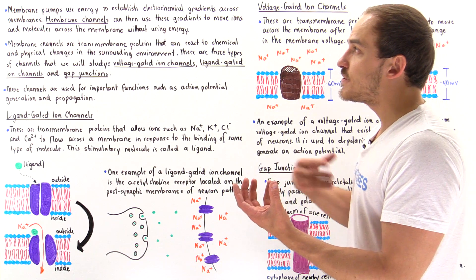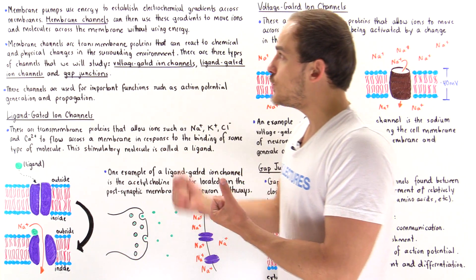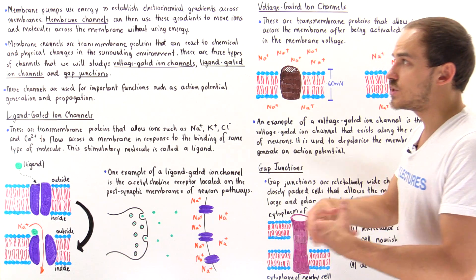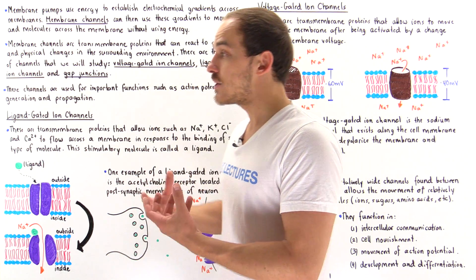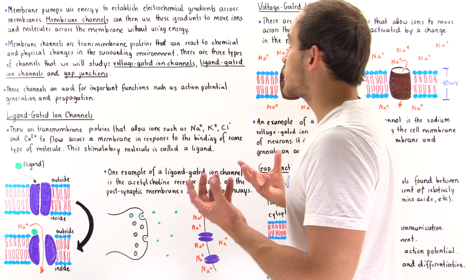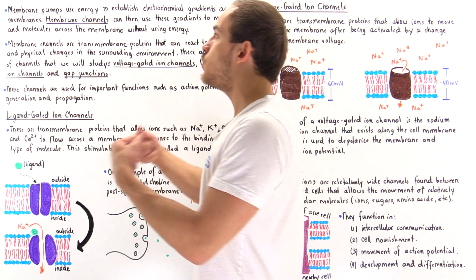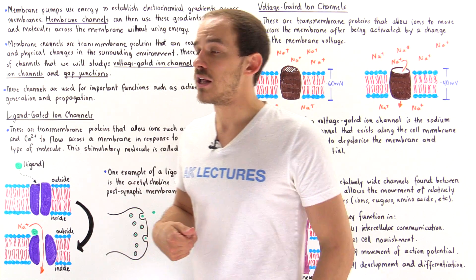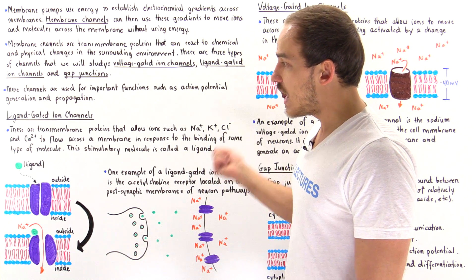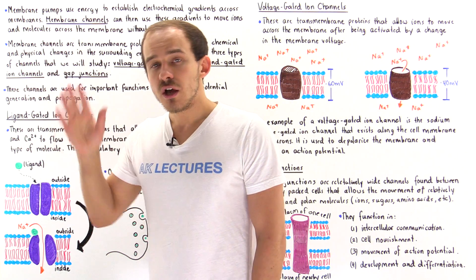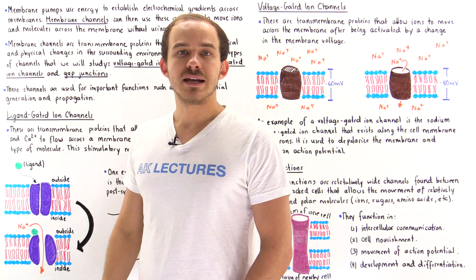In summary, we have membrane pumps that utilize ATP and other energy sources to generate electrochemical potentials, and we also have membrane channels that utilize those established electrochemical gradients to actually move ions and molecules across the membranes found inside our cells.